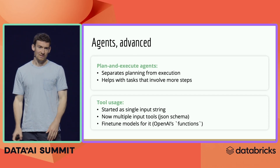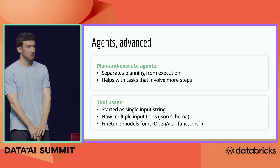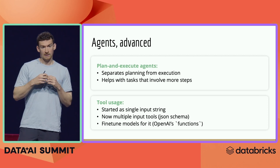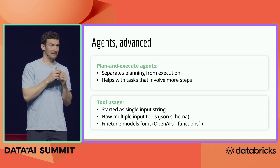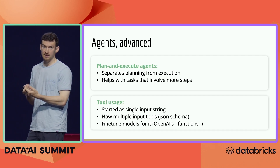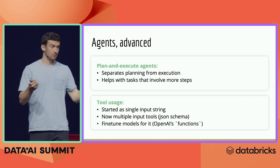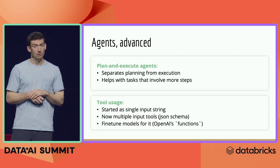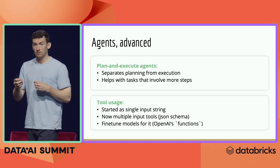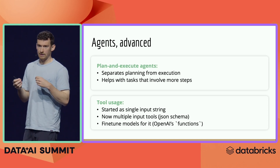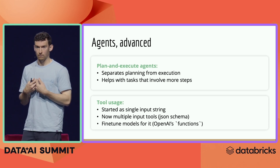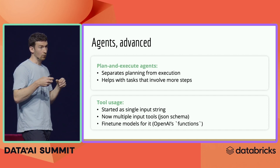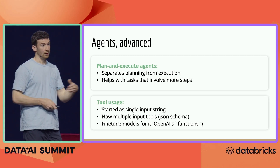We're also really interested in advances in agents, which is one of the fastest-moving spaces. I'm excited by plan-and-execute style agents, where instead of going one step at a time, you do a planning step, execute the first step in that plan, return to the planning step, and adjust the plan from there. This helps with longer-running tasks and was heavily inspired by open source projects like BabyAGI. Another area we're watching closely is tool usage. Tools started as functions accepting a single string input because that's what language models could handle, but now they're good enough to accept more complex structures with multiple function calls, and we're working to support and push that forward.